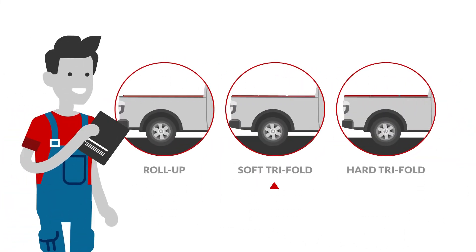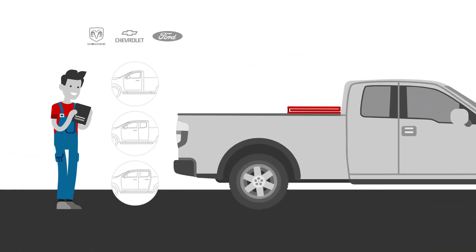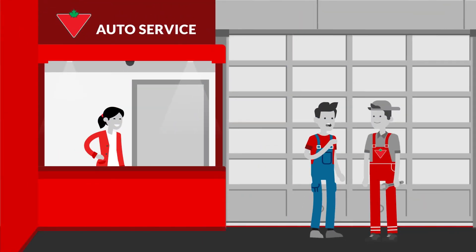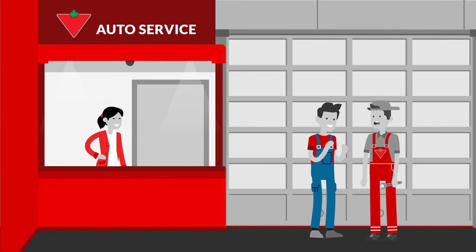Once you've settled on the style that works best for you, finding the right tonneau is easy. Take note of your vehicle's make, model number, cab style, and most importantly, bed length before you shop. Still stuck? Ask a Canadian Tire automotive expert for help.